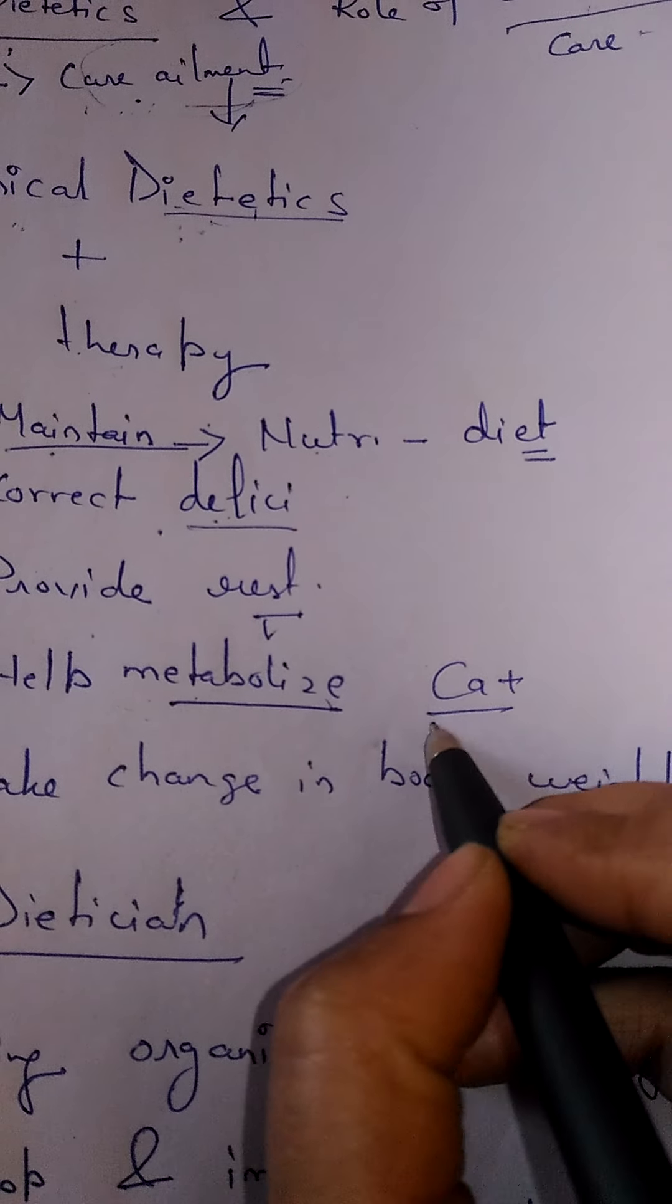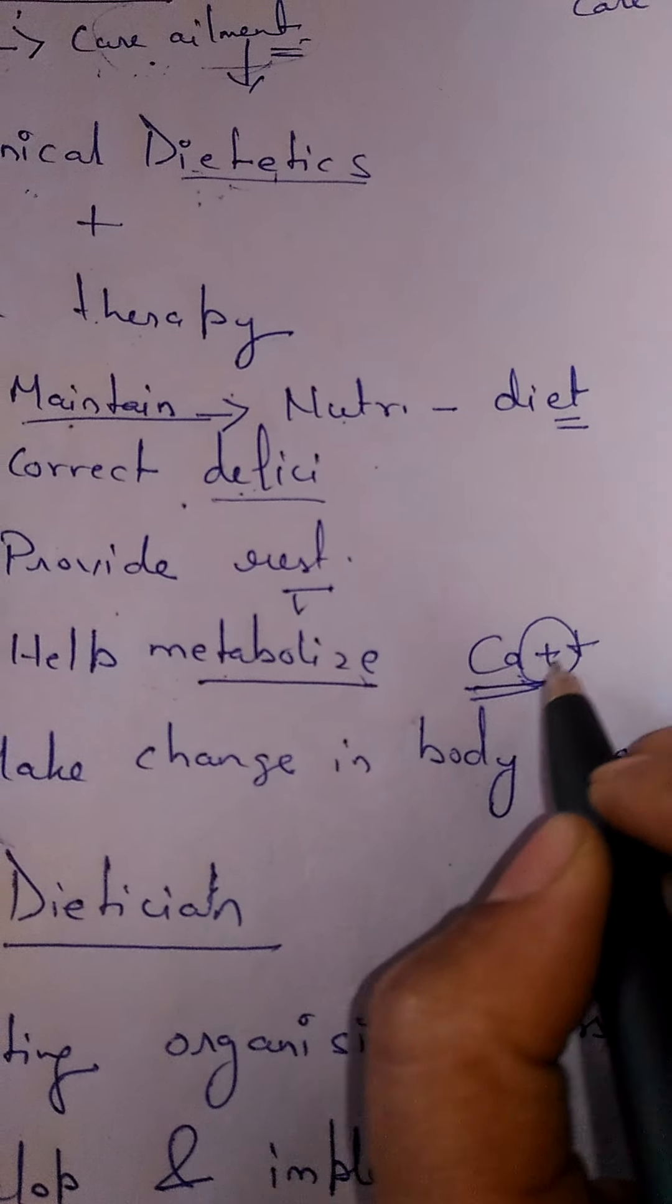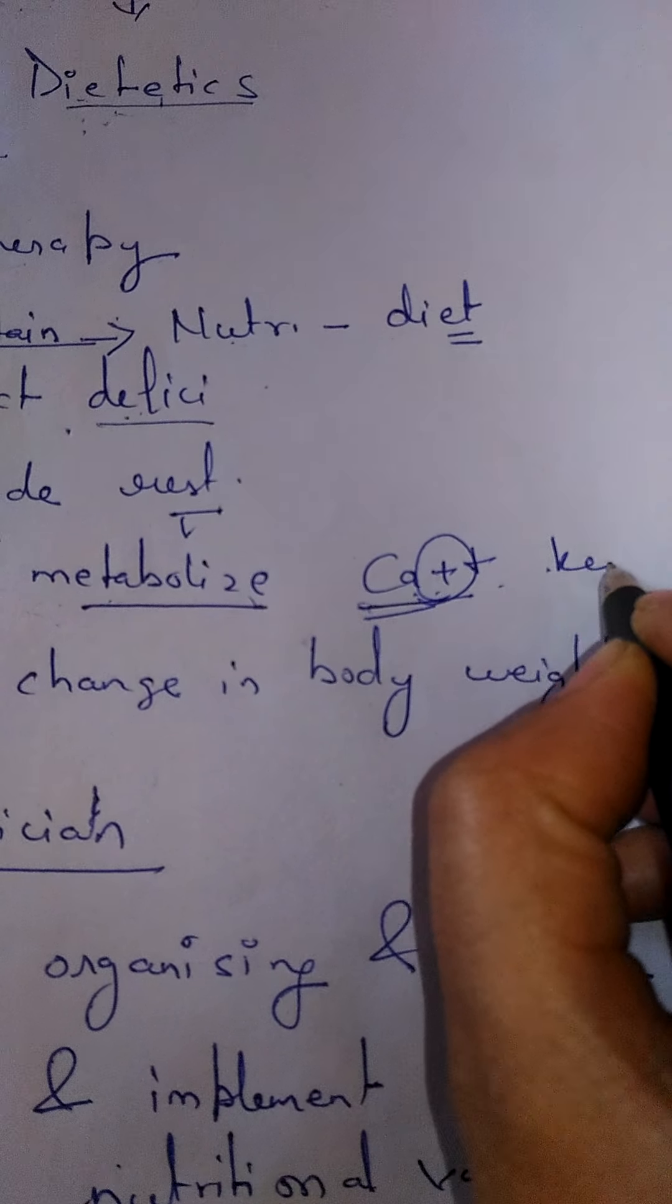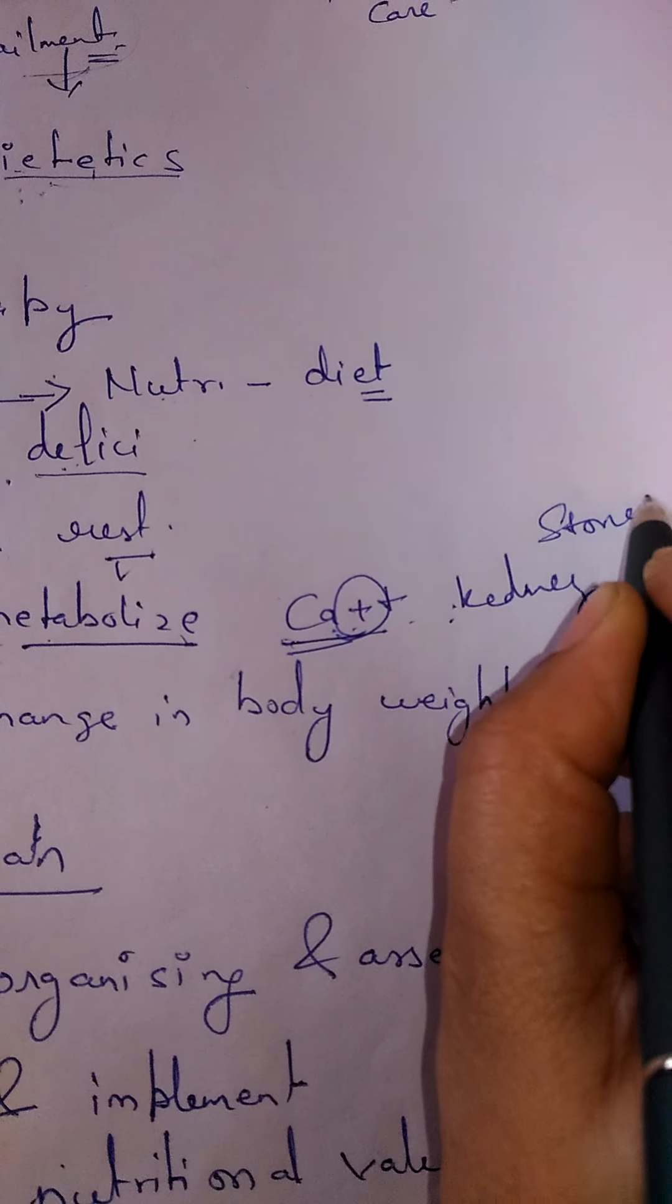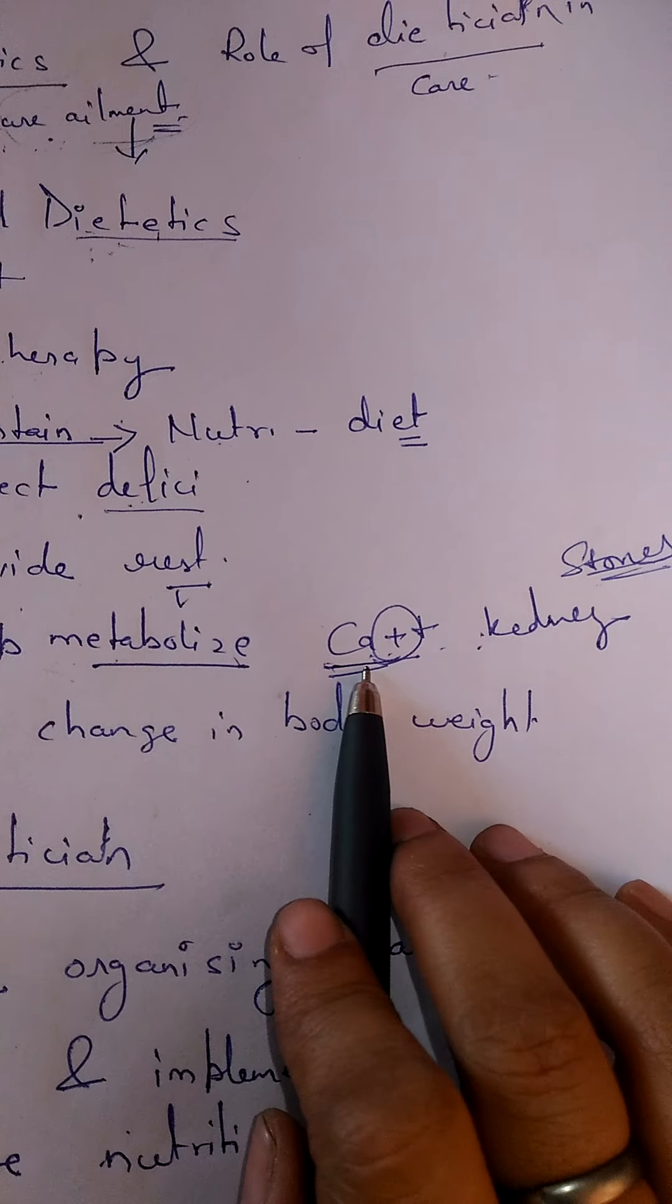Like suppose if crystals of calcium get accumulated at one place, suppose in the kidney, these are going to lead to the formation of kidney stones.